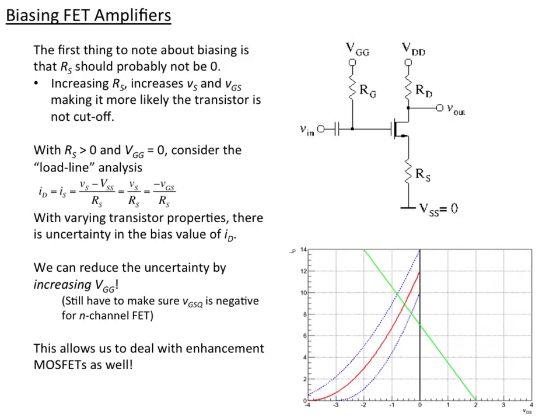The nice thing about this is that now we can actually increase VGG and make it not zero, but say two volts as shown here. Now it's not minus VGS over RS. Notice it's two minus VGS all over RS. And that gives this line here. And note that this means that we can also extend it to the case where we have an enhancement mode FET or even if we have a depletion mode, we can move this up into the positive region.